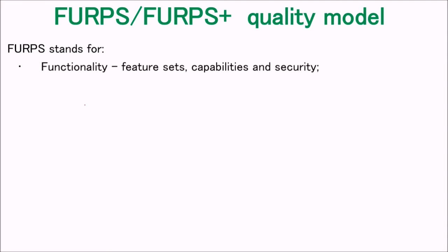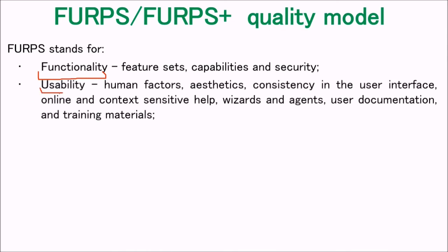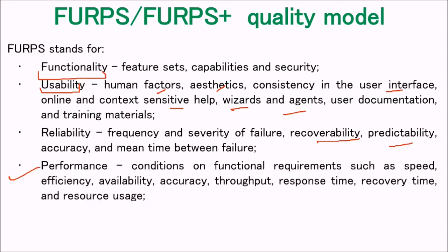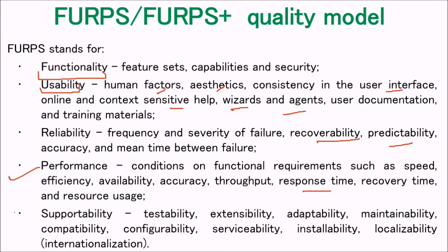In the FURPS model: Functionality covers feature sets, capabilities, and security. Usability includes human factors, aesthetics, consistency in the user interface, online and context-sensitive help, wizards and agents, user documentation, and training materials. Reliability covers frequency and severity of failures, recoverability, predictability, accuracy, and MTTF (Mean Time to Failure), MTD, and BEF. Performance covers speed, efficiency, availability, accuracy, throughput, response time, recovery time, and resource usage. Supportability includes testability, extensibility, adaptability, maintainability, compatibility, configurability, serviceability, installability, and localizability (internationalization).